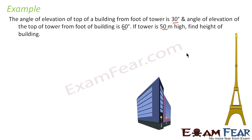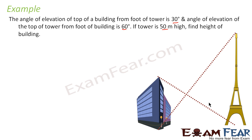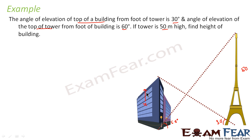Let's draw this scenario. This is the building and this is the tower. The angle of elevation from the foot of the tower to the top of the building is 30°, and the angle of elevation from the foot of the building to the top of the tower is 60°. The tower is 50 meters high. We need to find the height of the building. Let's draw the triangles and name the points A, B, C, D.